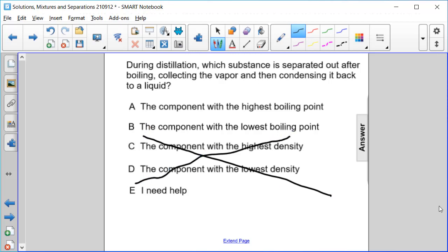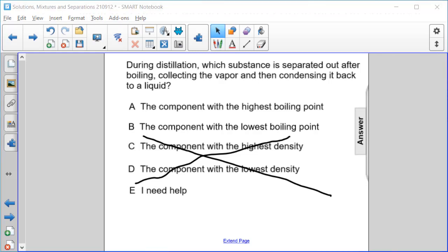So now what happens to the component with the highest or the lowest boiling point? After boiling, the one with the lowest boiling point is the one that, when it goes through the cooling tube, will be collected and then condensed back.